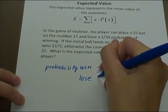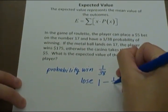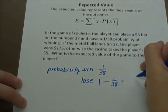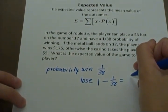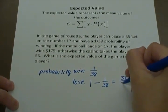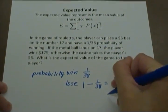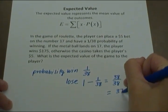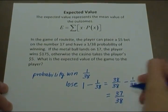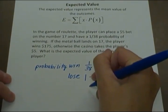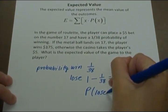You have to take 1 minus the probability of a win to get the probability of a lose, which would be 38 over 38 minus 1 over 38, which is equal to 37 over 38. And that would equal the probability that you lose.